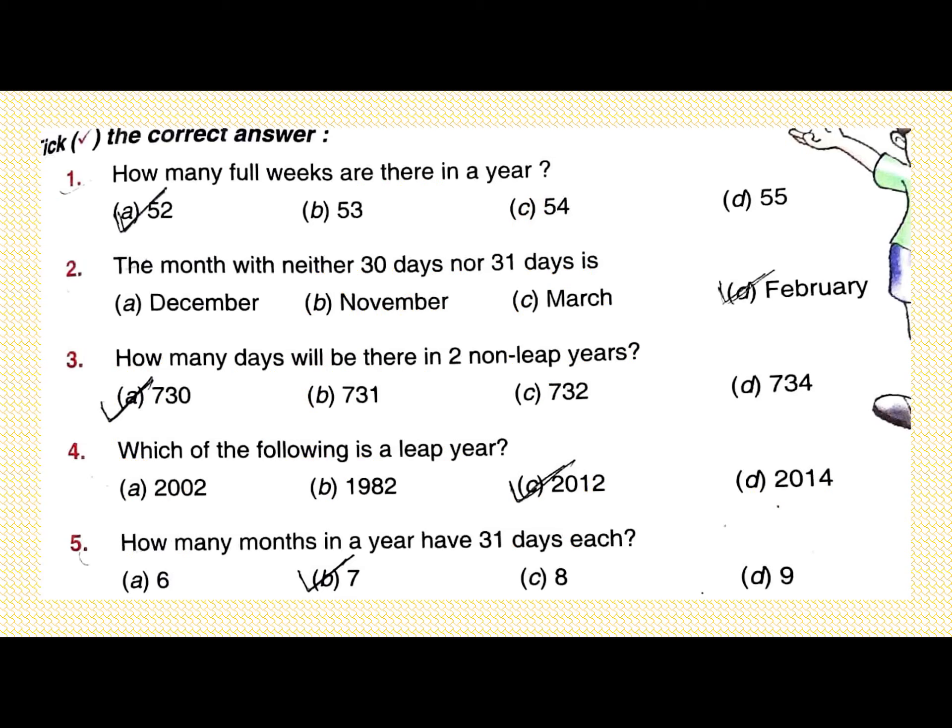Question number 2: the month with neither 30 days nor 31 days. There is only one month with neither 30 days nor 31 days — this is February.